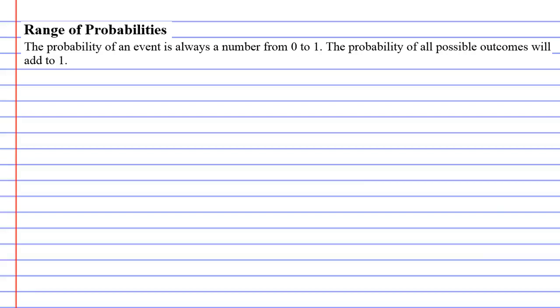Range of probabilities. Now the probability of an event is always a number from 0 to 1. And to illustrate this we'll talk about two different situations that we're very accustomed to.